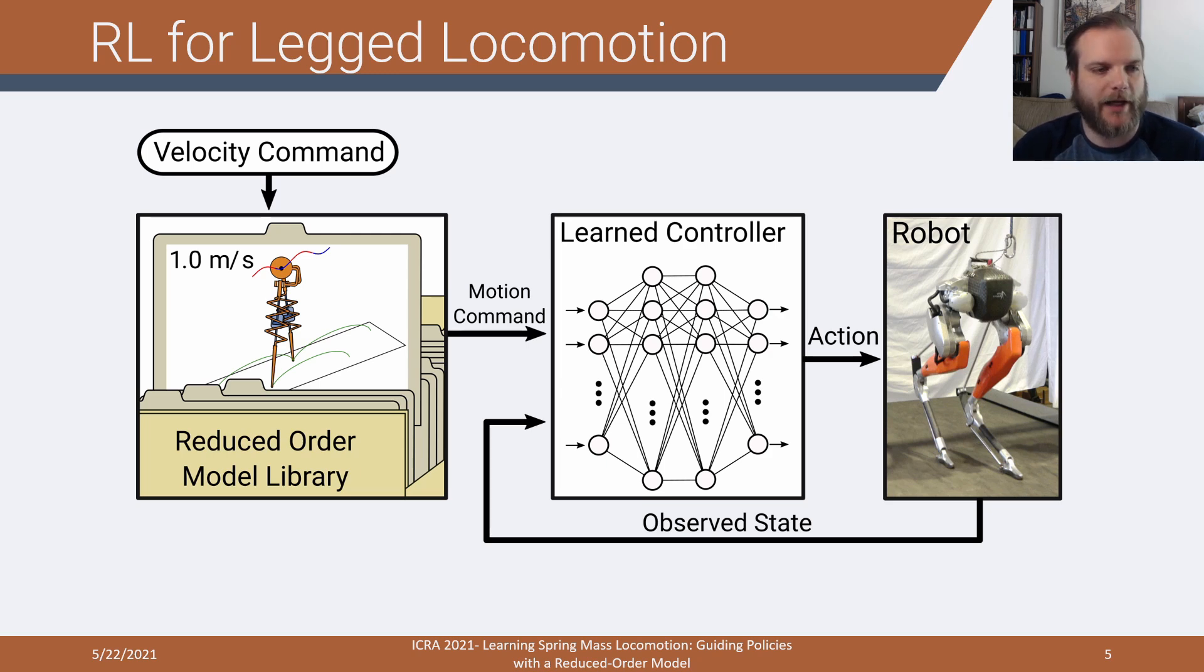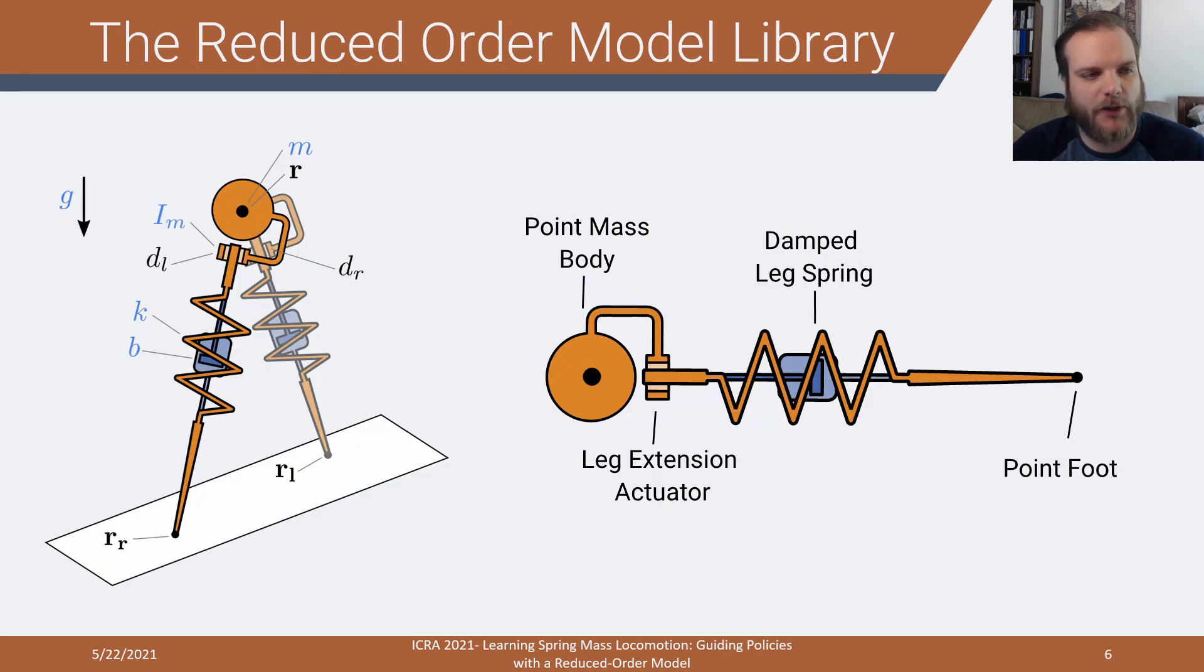Let's take a look now at the model we used to generate this library. This reduced order model we're going to use is an actuated spring-loaded inverted pendulum model, a bipedal one, so it has two legs. This model has a point mass body, so there's no orientation information. It has a leg length extension actuator in series with a damped leg spring, and then a point foot. This leg is entirely massless, so when you're in single stance you can teleport this leg forward to be ready for the next double stance.